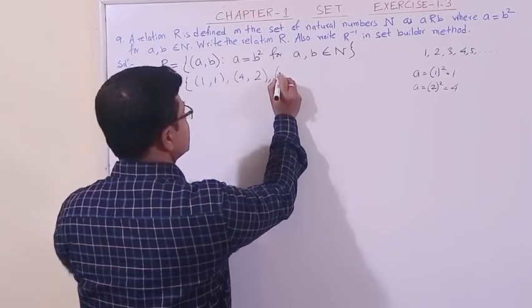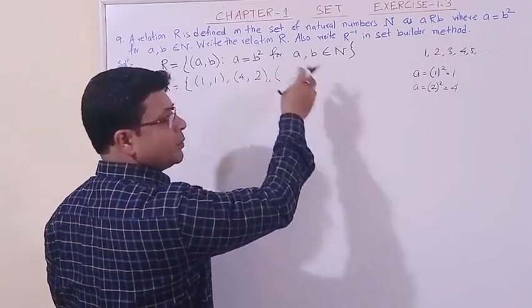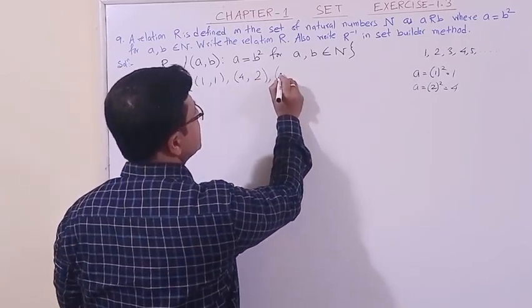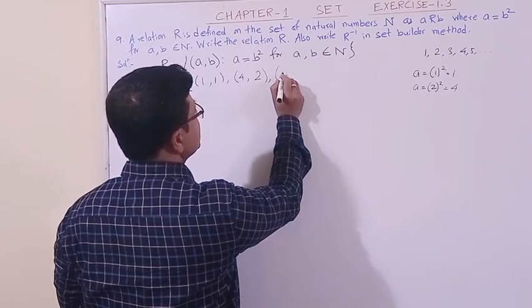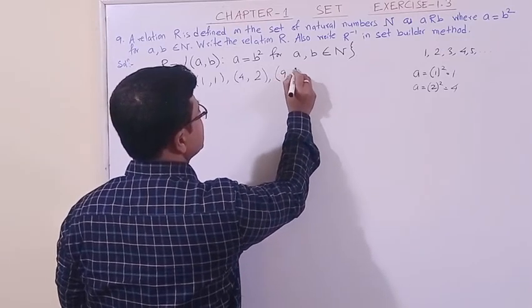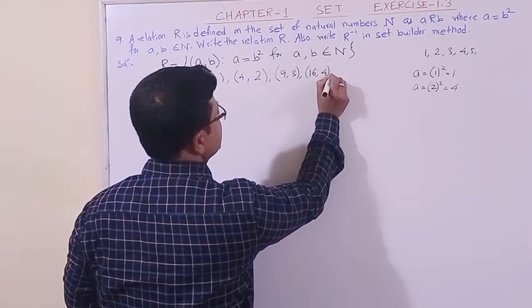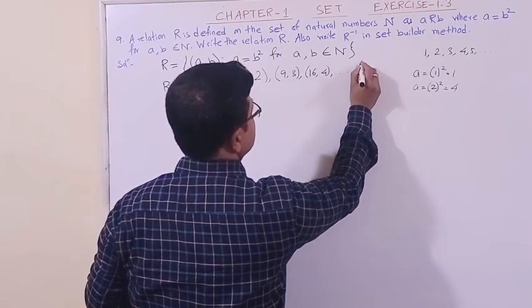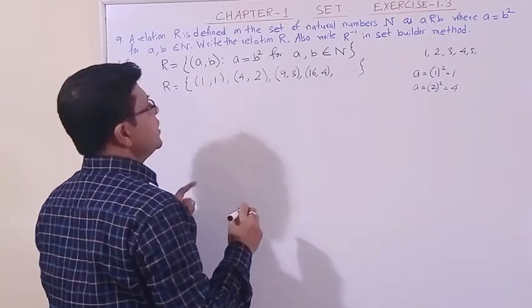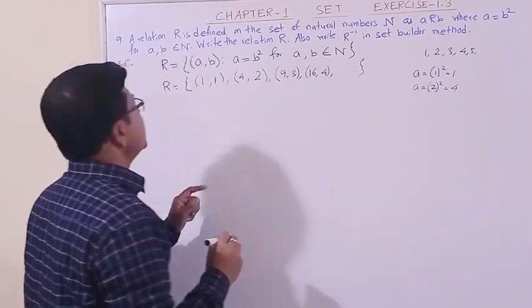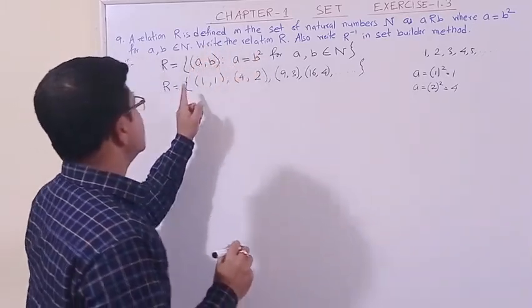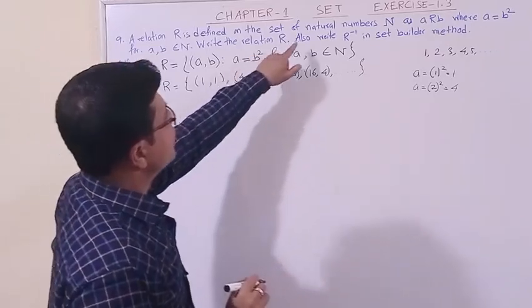The first component is the square of the second component. So we have (9,3), (16,4), and so on. This is an infinite relation. The question asks us to write the relation R and also write the inverse relation in set builder method.